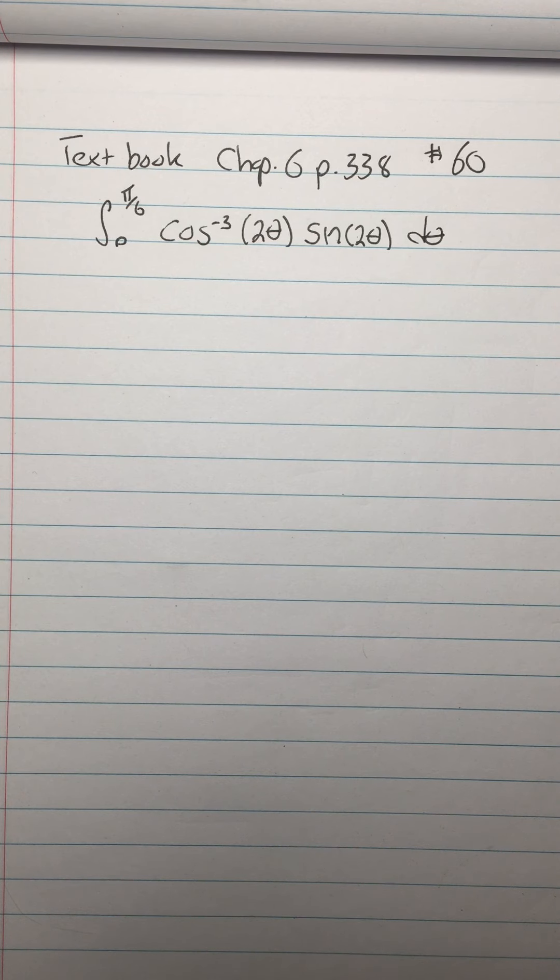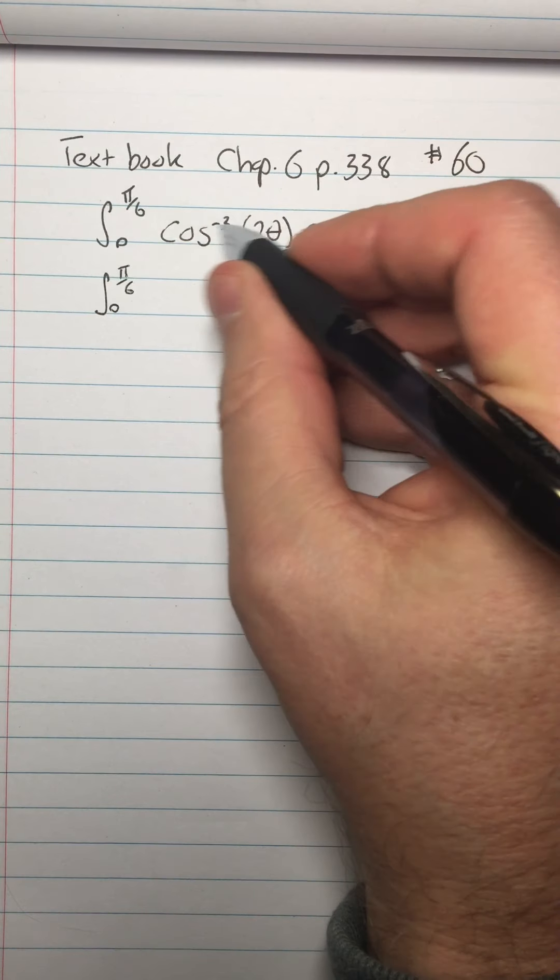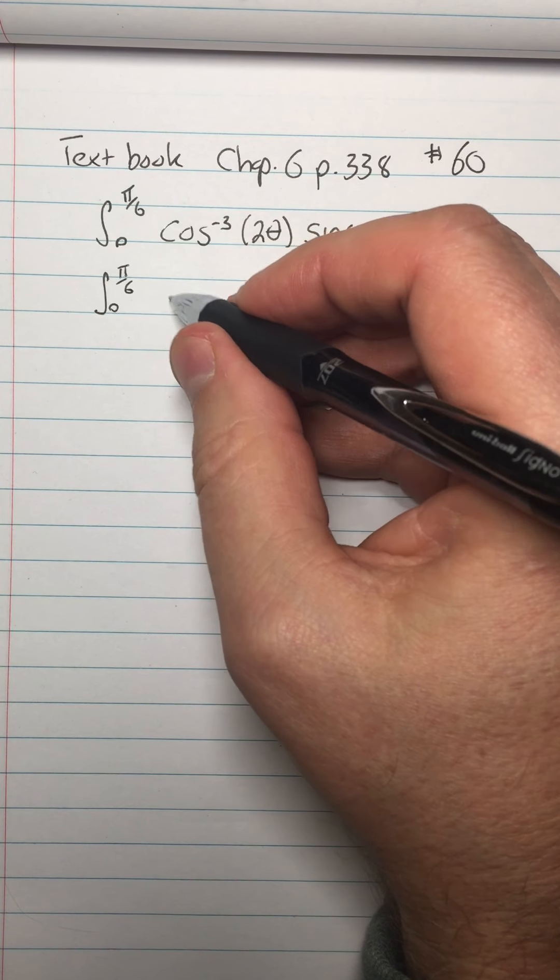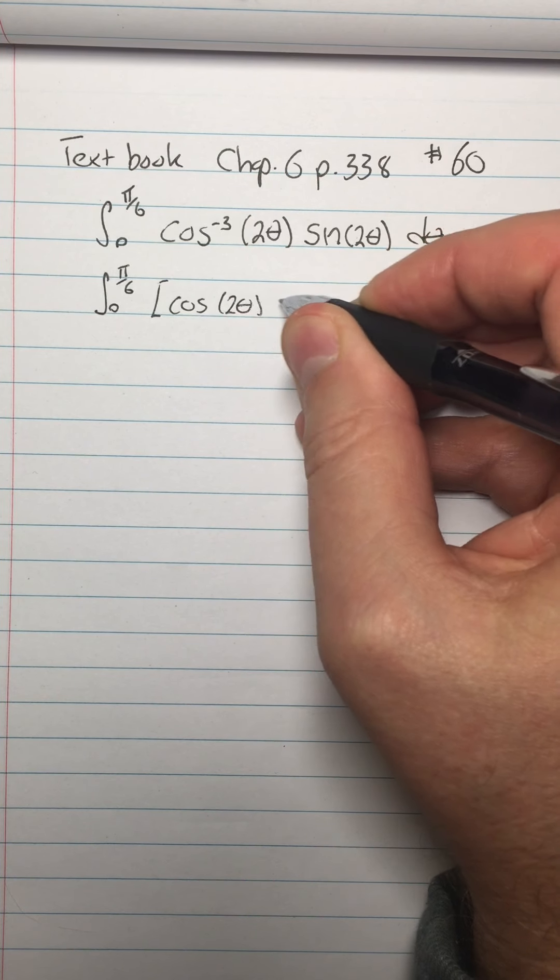So what's the inside function? Sort of looks like there's more than one. One thing that might help is if we write this integral. Like when you see a trig function with an exponent like that, why not just write that exponent outside the function, which is what that really means.